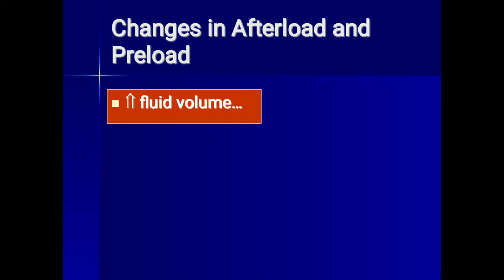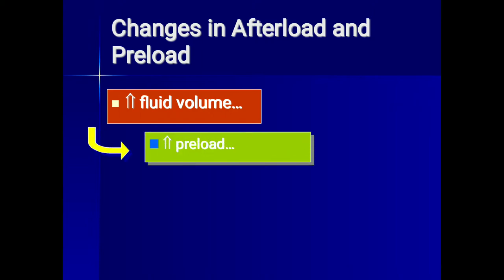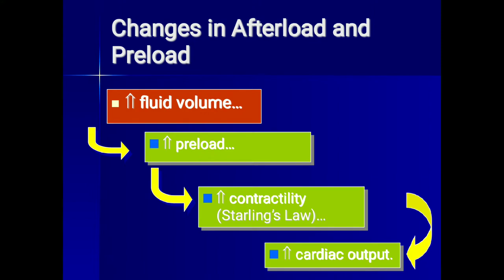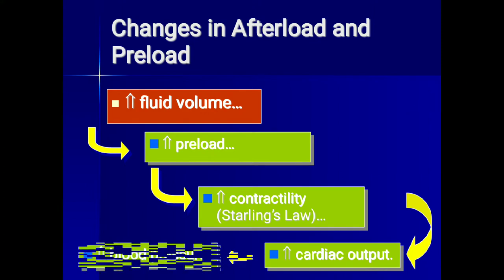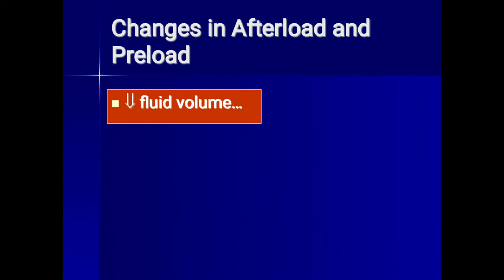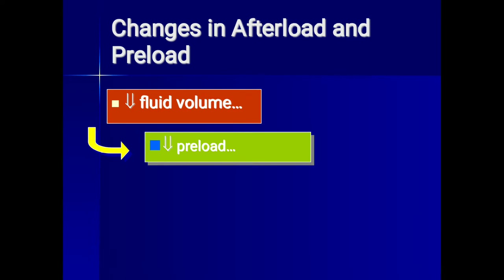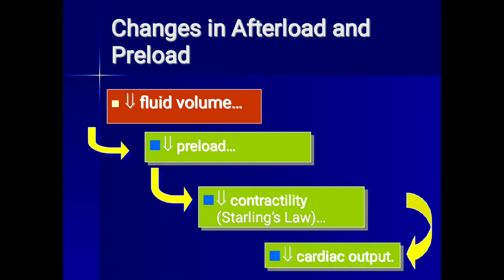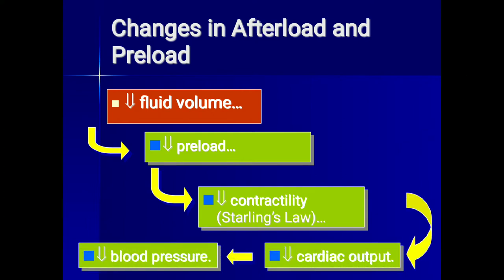If there is an increase in fluid volume, there is an increase in preload and increased contractility due to Starling's law, thus increasing cardiac output and blood pressure. A decrease in fluid volume reduces the preload, reduces contractility by Starling's law, reduces cardiac output, and thus reduces blood pressure.